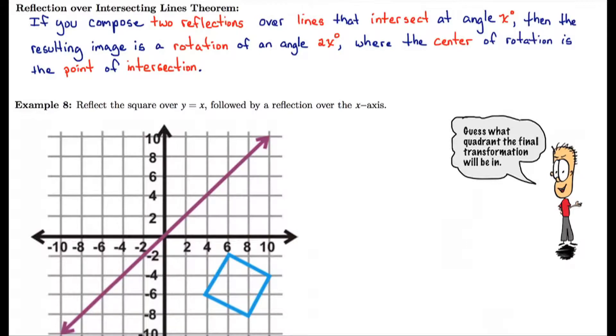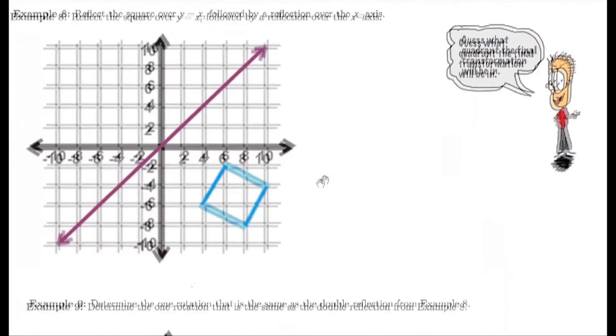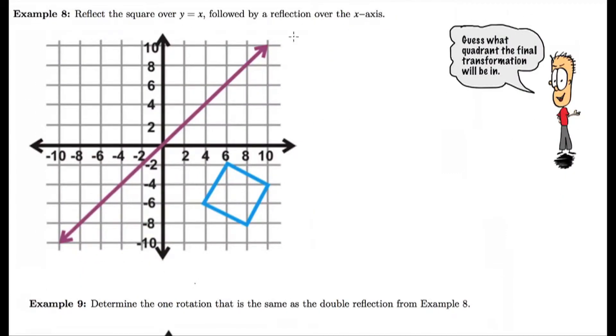Okay, so let's take a look at two more examples where we can put this theorem to work. In example eight, we're going to reflect the square over y equals x followed by the reflection over the x-axis.